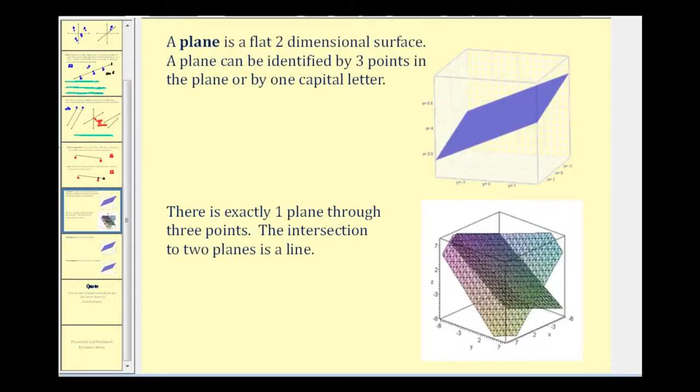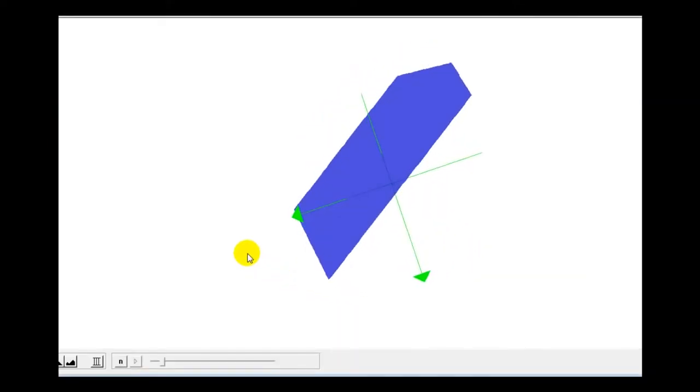The last topic I want to talk about is a plane. A plane is a flat two-dimensional surface. And a plane can be identified by three points in the plane or by one capital letter. So if we have points A, B, and C in the plane, we can identify this as plane ABC. Or if we label this plane with one capital P, we can just call this plane P. Let's take a look at a plane in space to give this a better perspective. Here we see a blue plane in space.